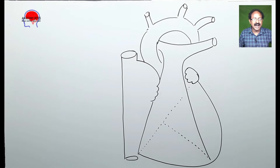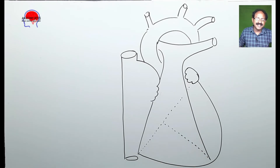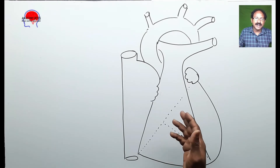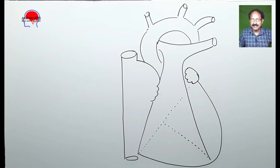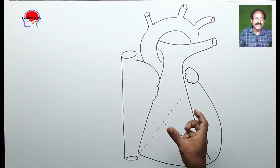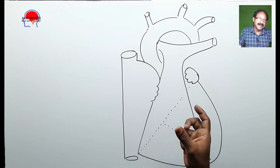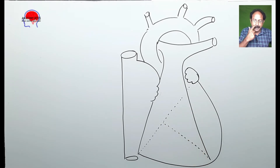This is the outline of the heart. Now we will learn how to draw the venous drainage, basically the coronary sinus and its tributaries in this diagram.